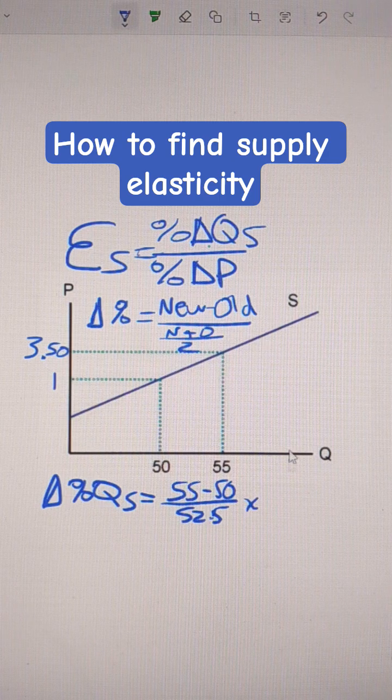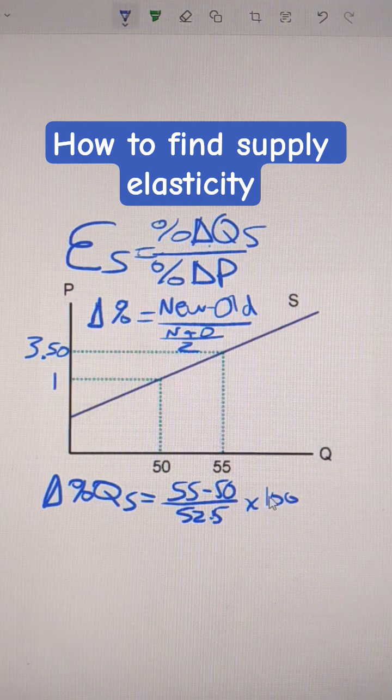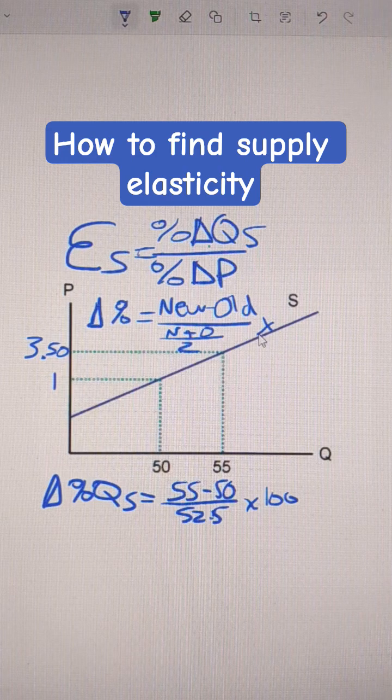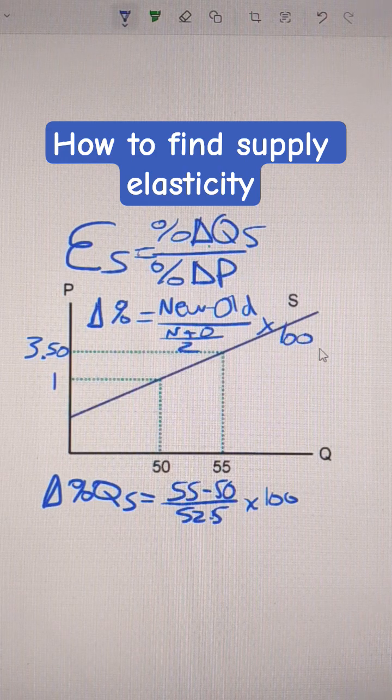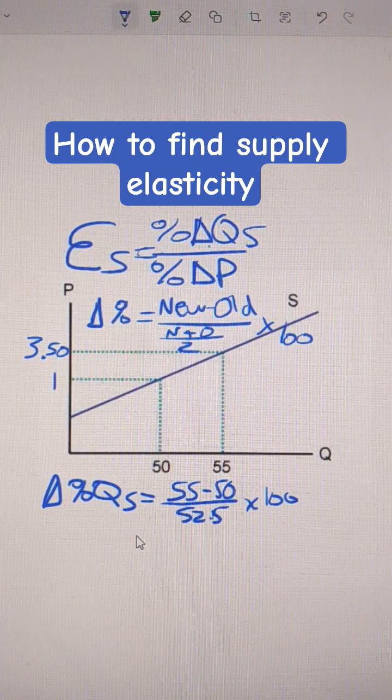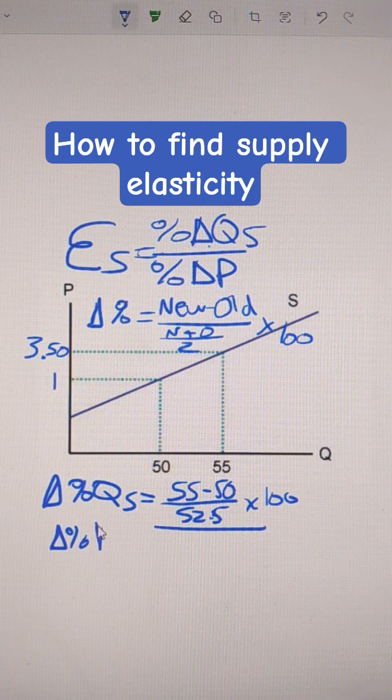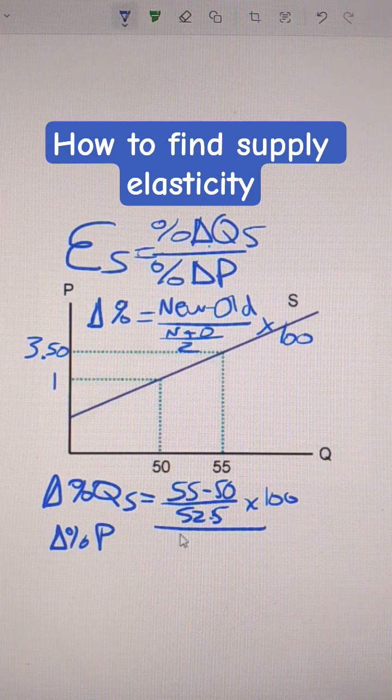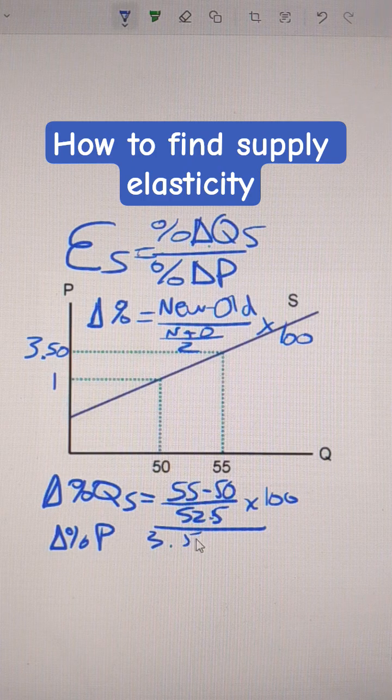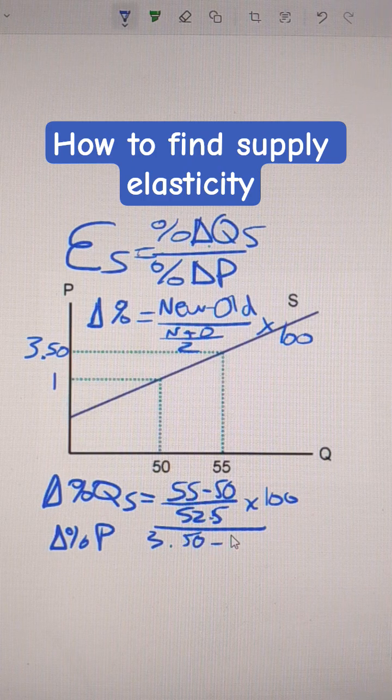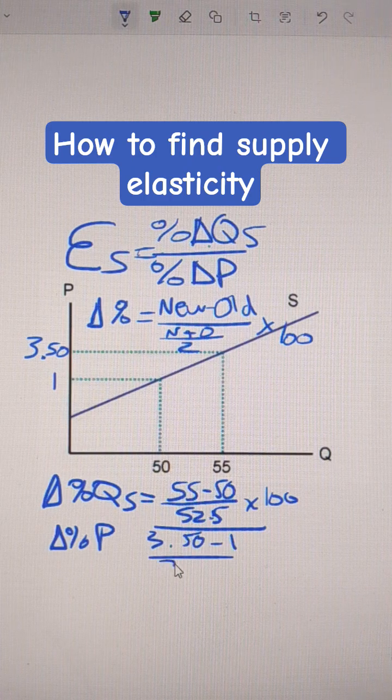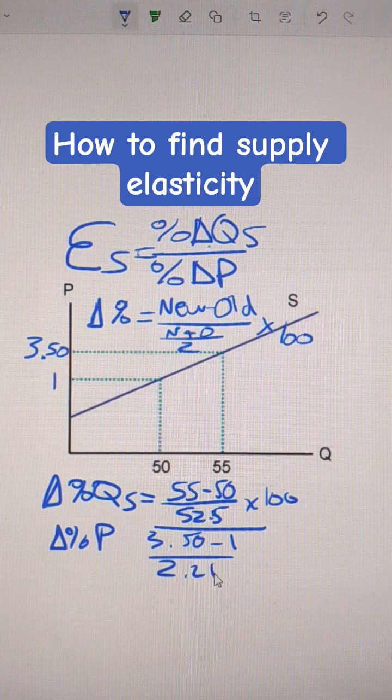And then we're going to multiply that by 100 to turn it into a percent. That's what I forgot to say on the percent change formula. Make sure you multiply by 100. And then the percent change in price is going to be 350 minus 1 over 225.